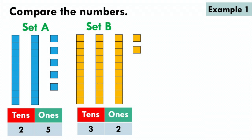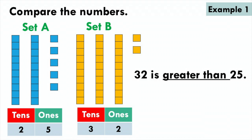When I compare numbers, I first look at the tens. So 25 has 2 tens and 32 has 3 tens. When I compare 2 and 3, I know that 3 tens is greater than 2 tens, so 32 is greater than 25.